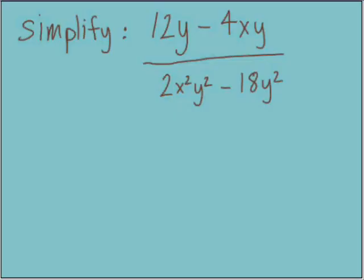Last example and one for you to try. So pause the video and work to simplify it and then come back and we'll look at this solution. Factoring the numerator, there is a GCF, 4y, in parentheses 3 minus x.